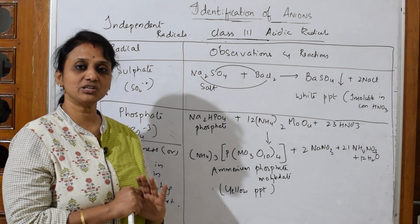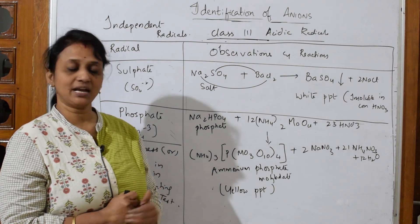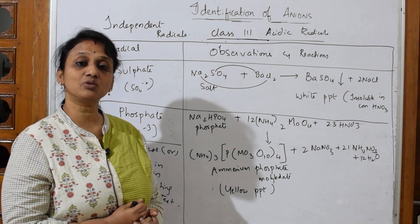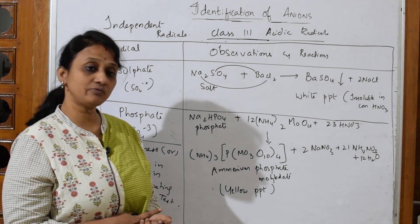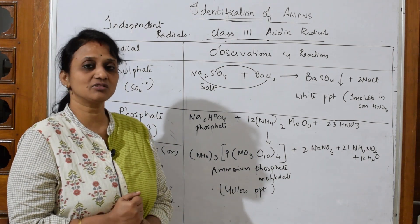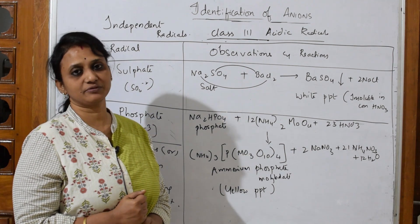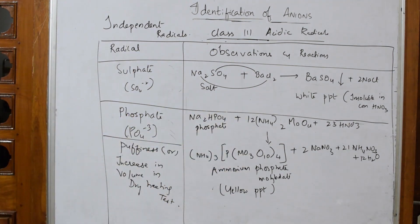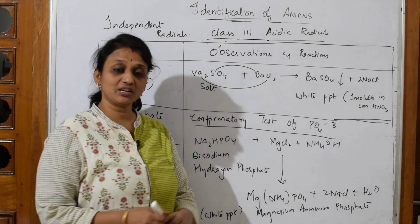So identification is done: the dry heating test showed increase in volume, and with ammonium molybdate we got a yellow color precipitate of ammonium phosphate molybdate. However, this yellow PPT is identification only — not yet confirmation. Let's come back and do the confirmatory test for phosphate.